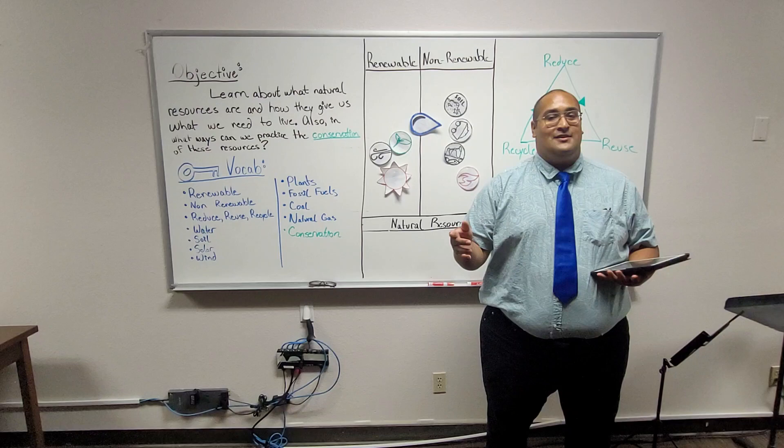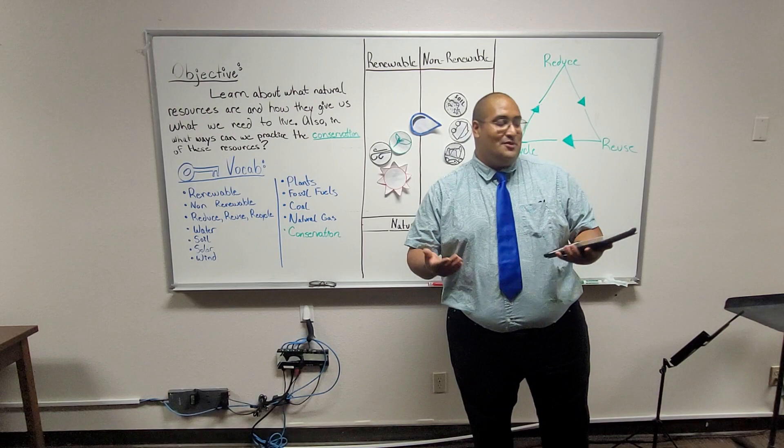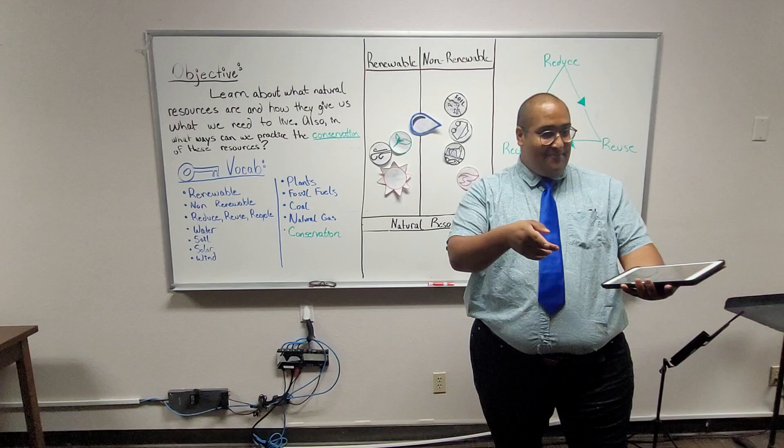So the materials that are located in the earth that occur naturally include rocks, minerals, soils, water, and gases in the atmosphere. Now remember we went over gases last time? Yeah? Perfect.